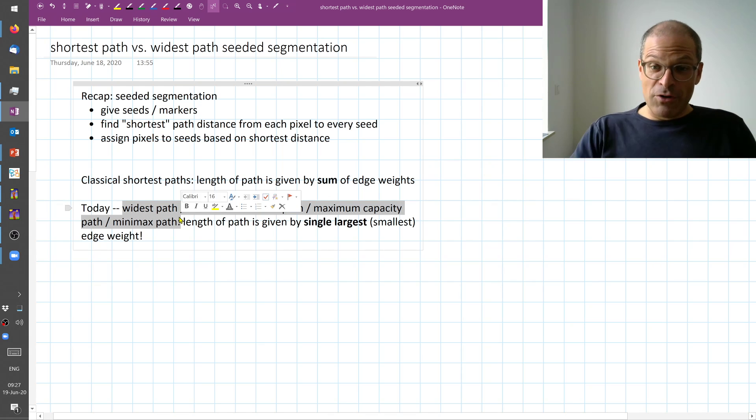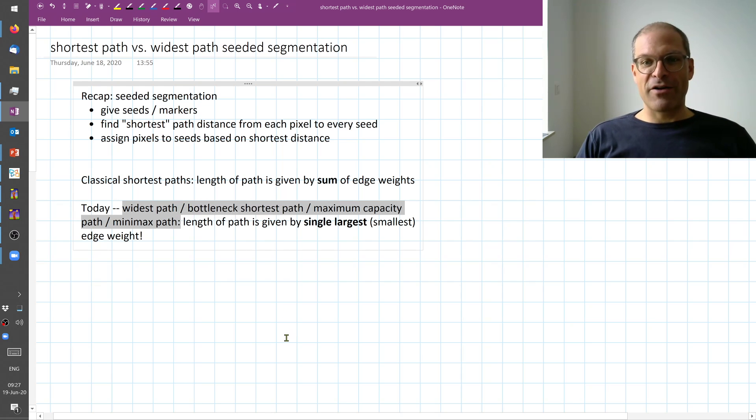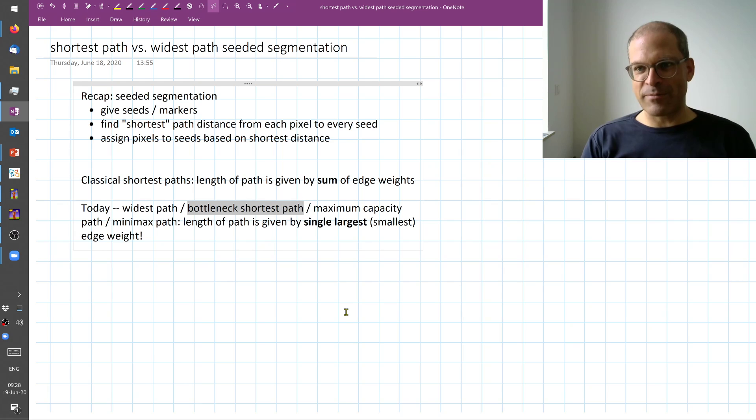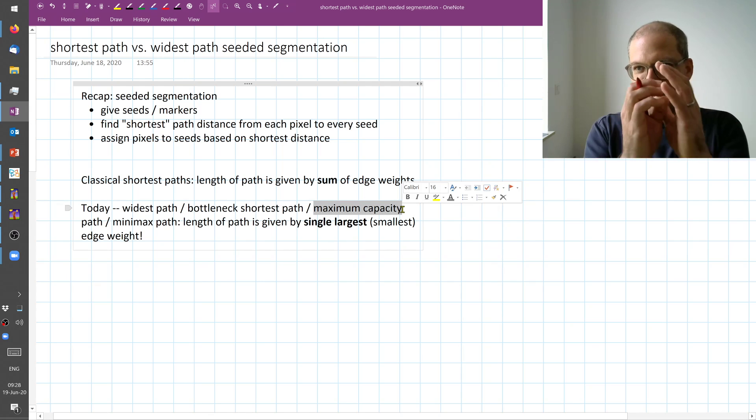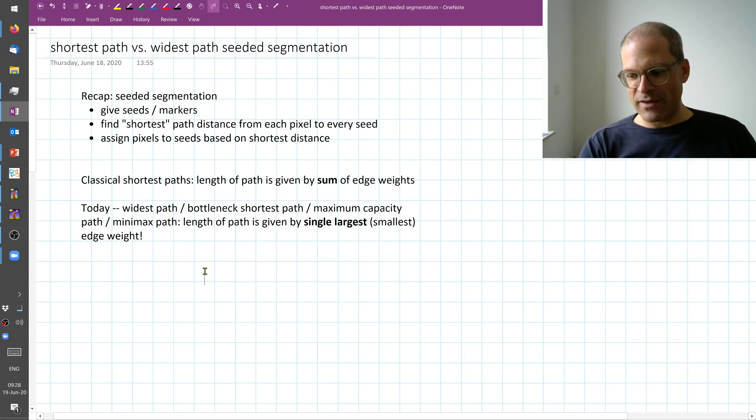Today we'll talk about the problem which is variously known as the widest path problem or the bottleneck shortest path, the maximum capacity path or the minimax path, where the length of the path is not given by the sum of the edge weights but by the single largest or single smallest edge weight. So for example in the bottleneck shortest path problem we're looking at limitations. So the thin bottleneck is bad. In this case it's the single smallest edge weight that matters. If we're talking about maximum capacity path, it's the same - it's the thinnest tube that matters if you want to pump something through a network. And the minimax path, here it is the largest weight that matters. And that's the formulation I'm going to use today.